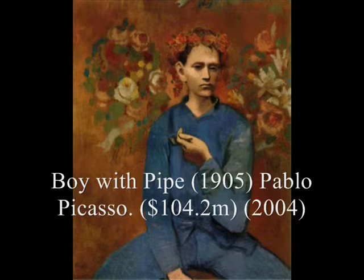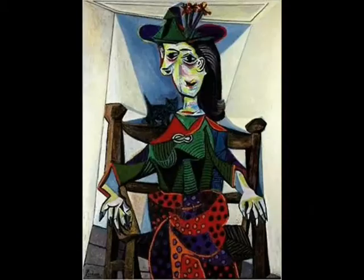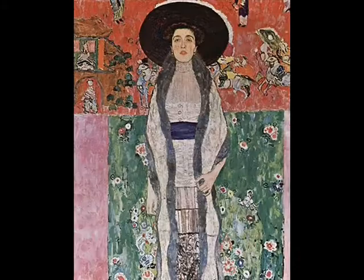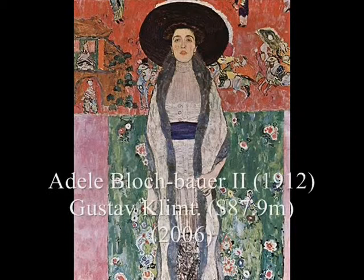Number four: Dora Maar with Cat, 1941, by Pablo Picasso — $95.2 million in 2006. Number five: Adele Bloch-Bauer II, 1912, by Gustav Klimt — $87.9 million in 2006.